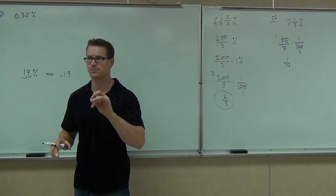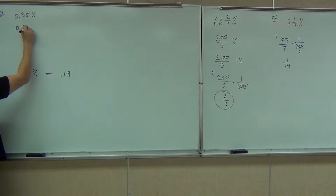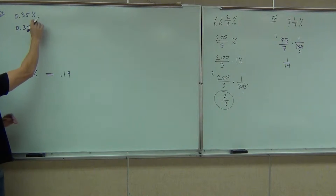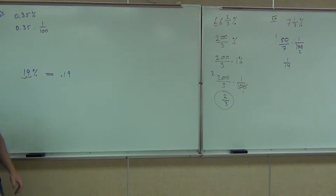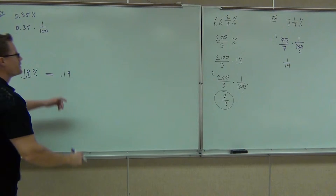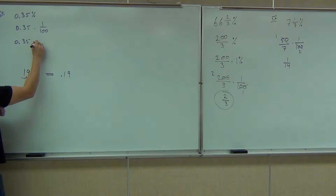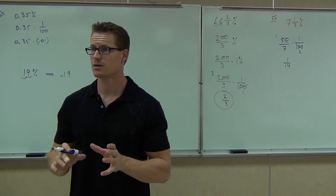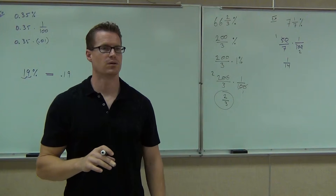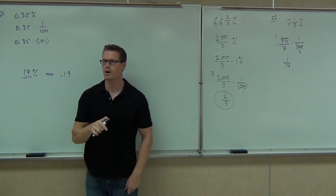You ready to watch it? Watch. You've got 0.35 times — the percent equals 1 over 100, yeah? If you have 1 over 100, that's the same thing as 0.35 times 0.01. 1 over 100 is the same thing as 0.01, yes? Do you agree? Do it on your calculator right now. Do 0.35 times 0.01.